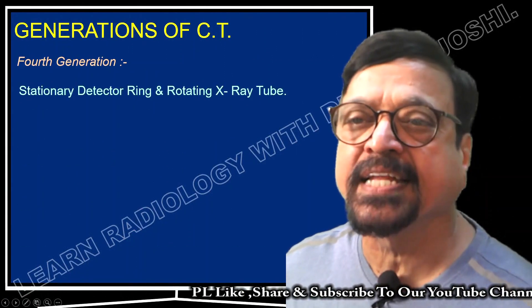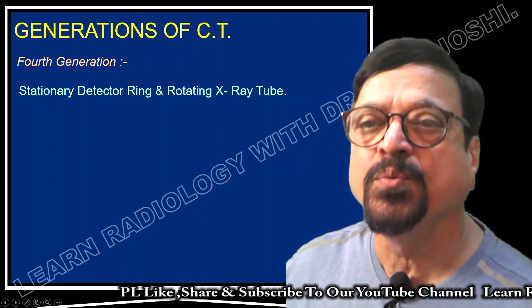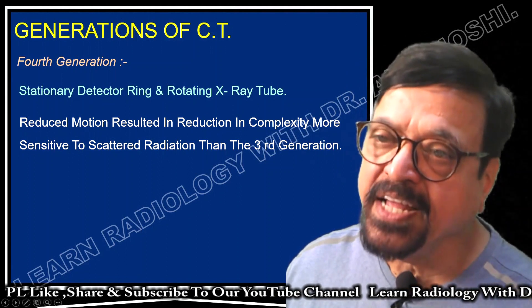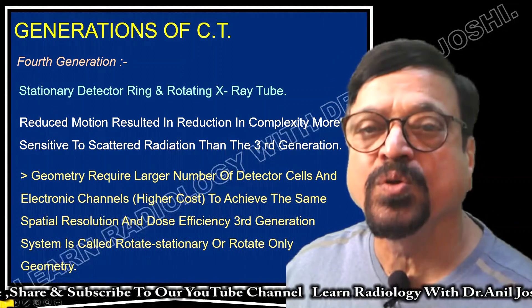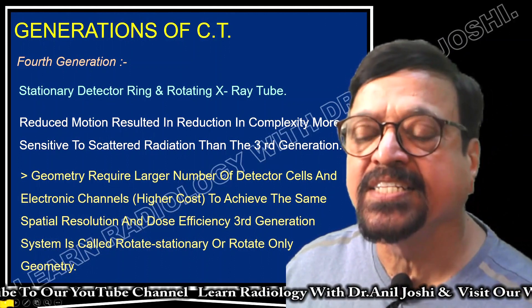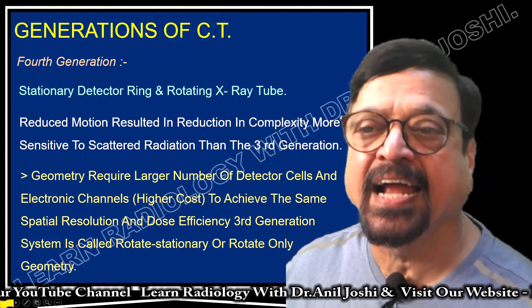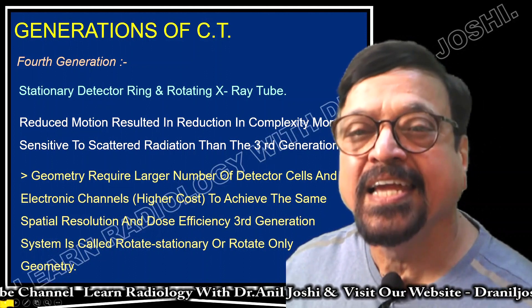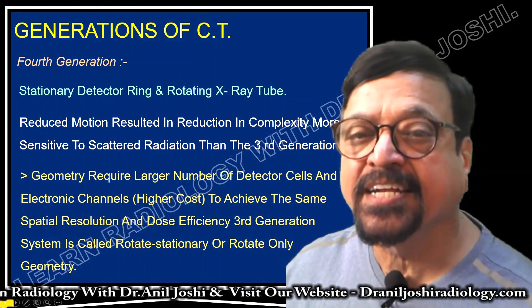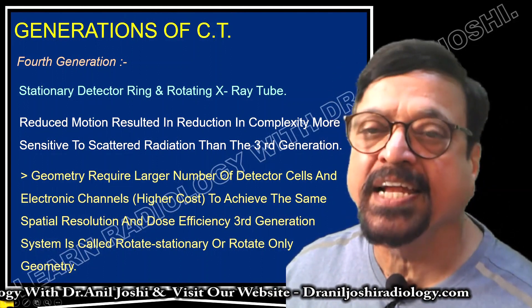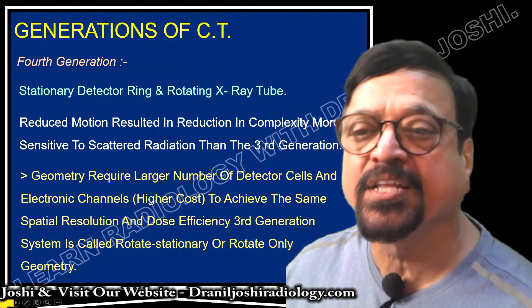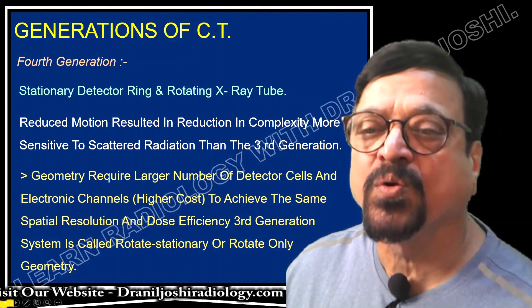In the fourth generation, where most scanners are today, the stationary detector ring and the rotational X-ray tube made the key difference. Reduced motion resulted in less complexity and more sensitivity to scattered radiation than the third generation, giving better image quality. This geometry required a large number of detectors and electronic channels, resulting in higher cost. However, solid-state detectors occupied smaller space and performed better. This generation achieved the same spatial resolution and dose efficiency as the third generation, with a rotate-stationary geometry.